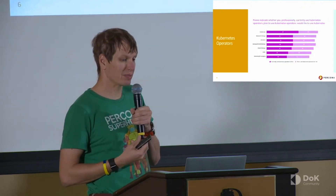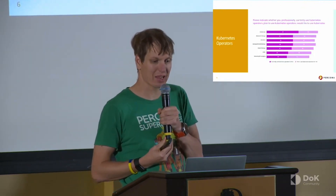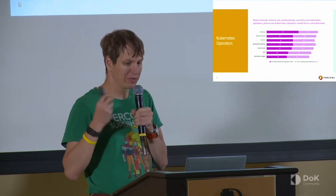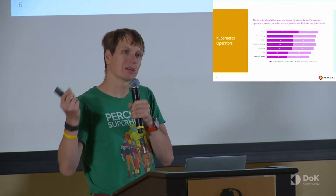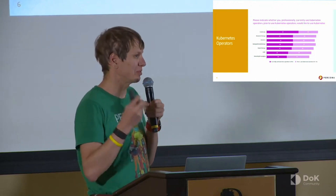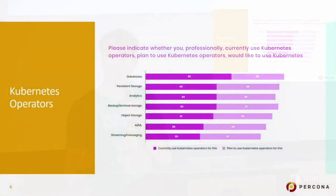The other data point is around Kubernetes operators — a very large number of folks are using or planning to use Kubernetes operators. That goes very well in line with the previous talk: if you're going the Kubernetes way, use the API and Kubernetes primitives to their full extent.